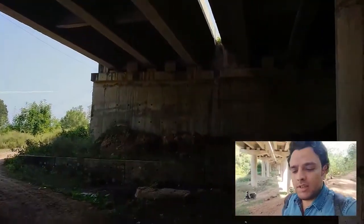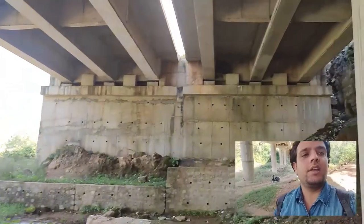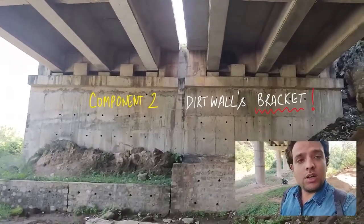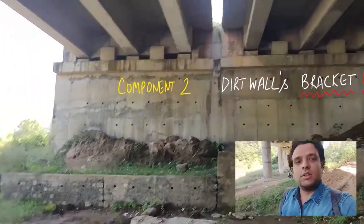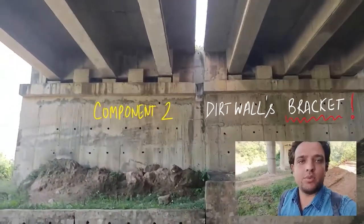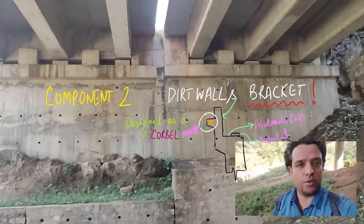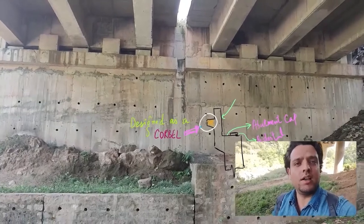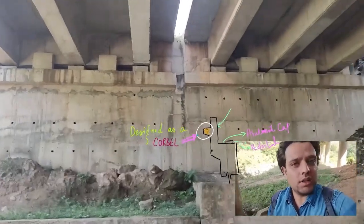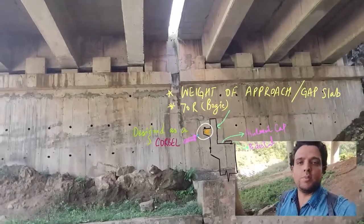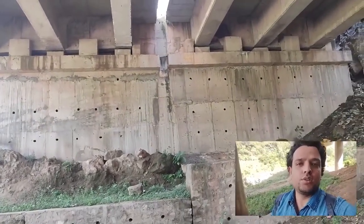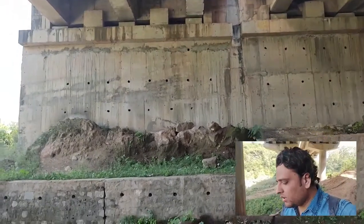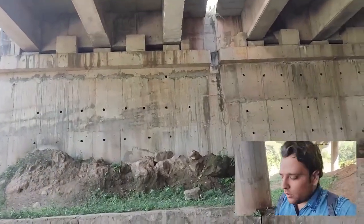Component number two is the dirt wall back bracket. You can see a last span abutment — this is a wall type abutment with a return wall. The dirt wall will be hidden under the return wall in this structure, but at the end of the episode, a clear image will be shown where there is no return wall — just a wall and a gap slab — clearly showing the dirt wall and bracket. The approach slab rests on it, and some vertical loads are designed for live load, generally 70-unit bogies. So component number two is a bracket.